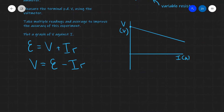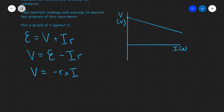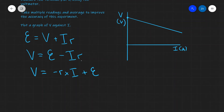Rewriting this equation, V equals minus R times I, plus the EMF. As you can see, these are mathematically equivalent: plus the EMF in both cases, and minus I times R is equivalent to minus R multiplied by the current.